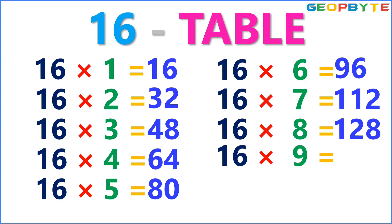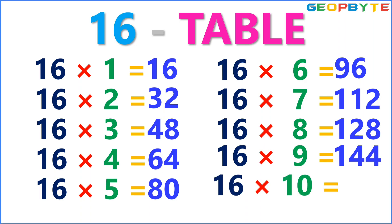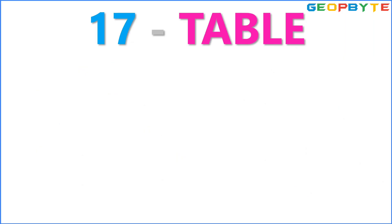16 nines are 144. 16 eights are 128. 16 tens are 160. Now, let us see the 17 table.